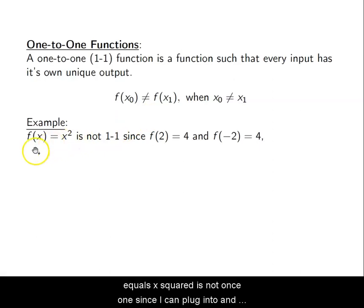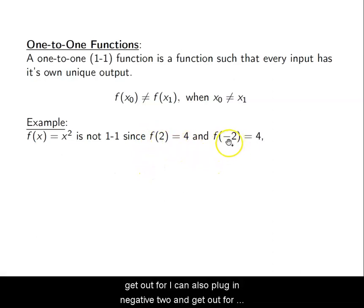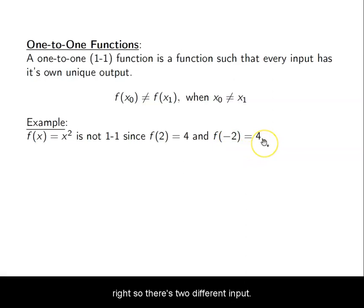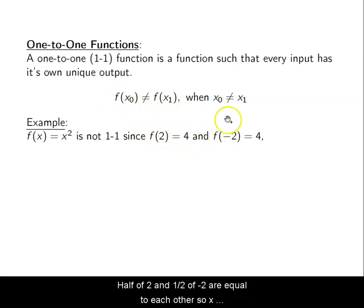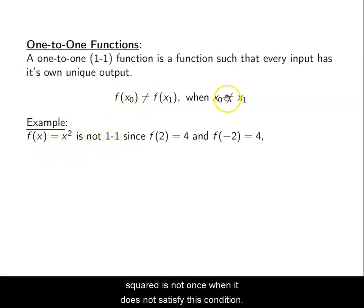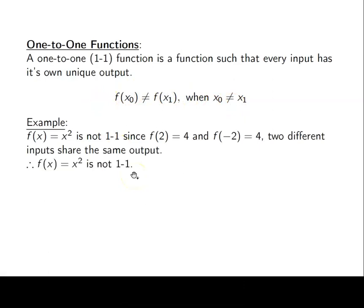For example, f(x) = x² is not one-to-one, since I can plug in 2 and get out 4, and I can also plug in negative 2 and get out 4. So there are two different inputs — 2 and negative 2 — but their outputs are the same. f(2) and f(-2) are equal to each other, so x² does not satisfy the one-to-one condition.